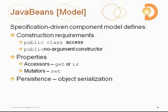From our perspective when we do web application design, we'll look at Java Beans with three things in mind. The first is the coding convention around construction. Java Beans tells us that we need to have a public class and a public no-argument constructor. While the compiler will add a constructor on our behalf if we forget one, the Java Beans model says we must explicitly provide a public no-argument constructor.